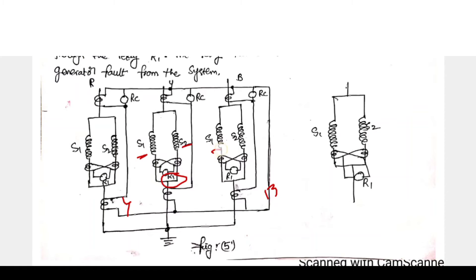Why we are using multi-turn generators? Because if any fault occurs in one turn, the relay will operate. The relays R1, R2, R3 can be used in between two turns, in between multi-turns. Here we are providing a relay.